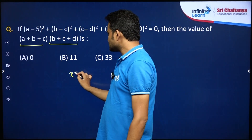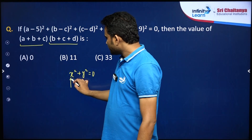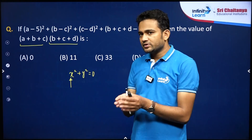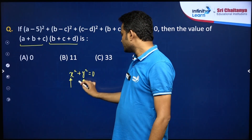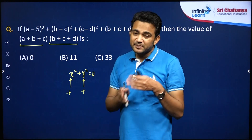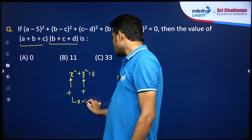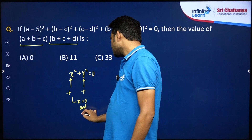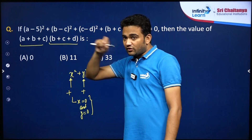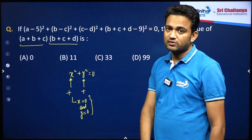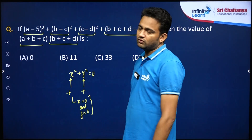For this, you should know this concept: if x square plus y square is 0, x square is always positive — whether you put a negative or positive value, squaring always gives a positive result. Similarly, y square is also positive. So the sum of two positive expressions is 0 only when both x is 0 and y is 0. You can use the same concept here — this is the addition of squares equal to 0, which means each particular term must be 0.